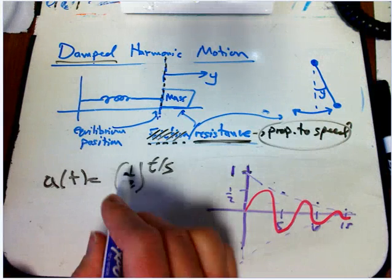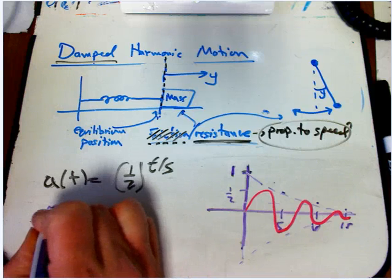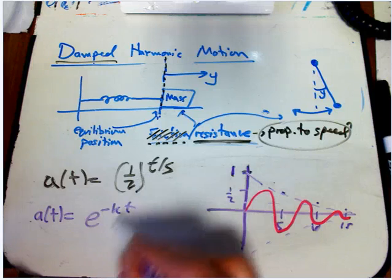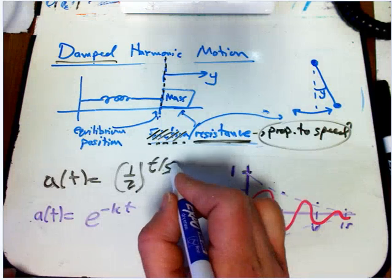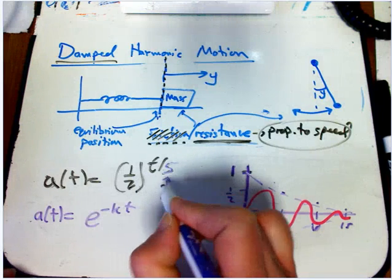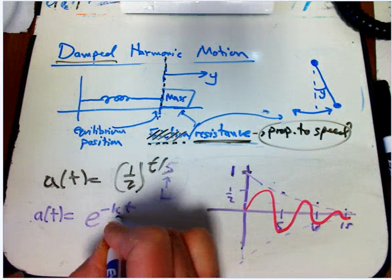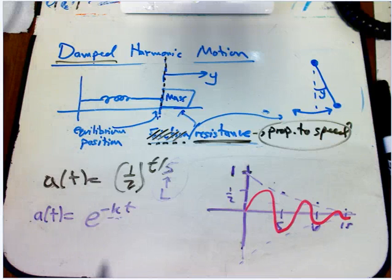Now, of course, we could also have a of t is like an e to the minus kt. These are equivalent. You just have to translate between this half-life terminology, which I think is more intuitive, and the k, which turns out to be better for calculus and other advanced applications.